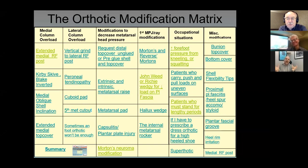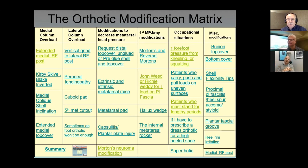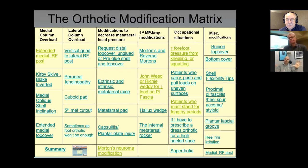That balance we have between wanting to prescribe something with the prescription variables we think are most appropriate, and the patient's tolerance and comfort — we know we could make something incredibly comfortable that doesn't achieve what we want mechanically, or make something that achieves our goals but is very poorly tolerated. We're looking for the magical zone in the middle. Can you give us tips on how to broach that, make sure there are no big trade-offs, and how to titrate those clinical scenarios?